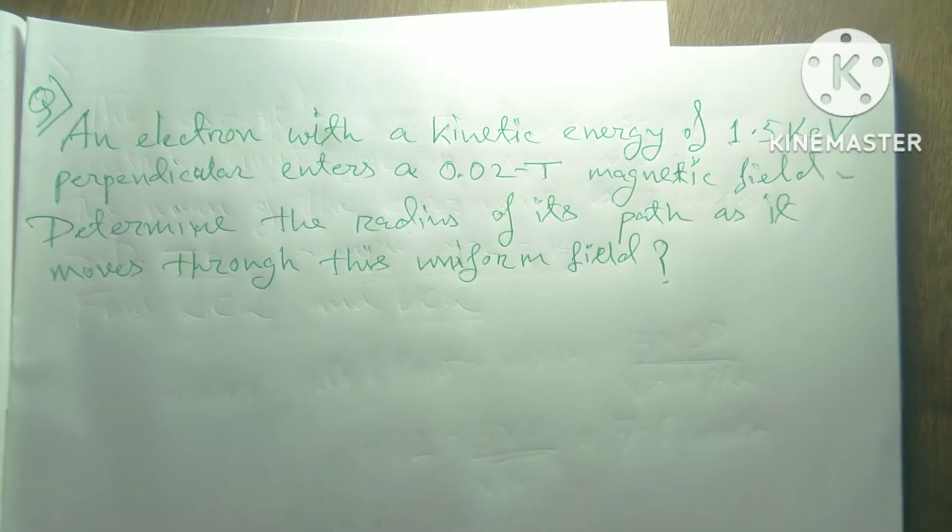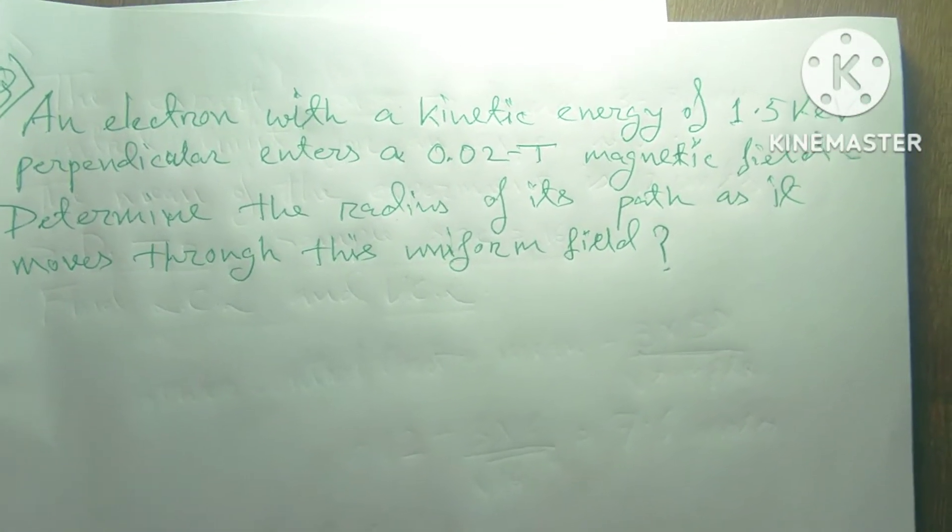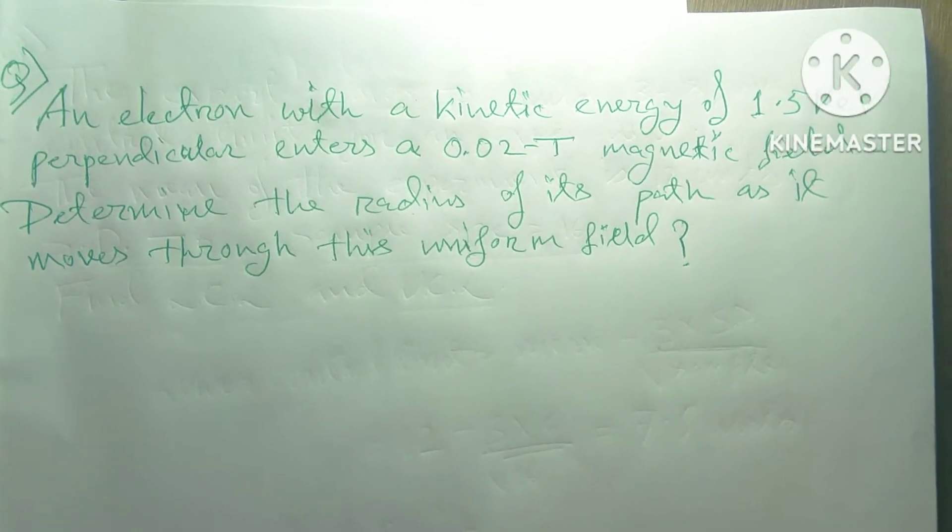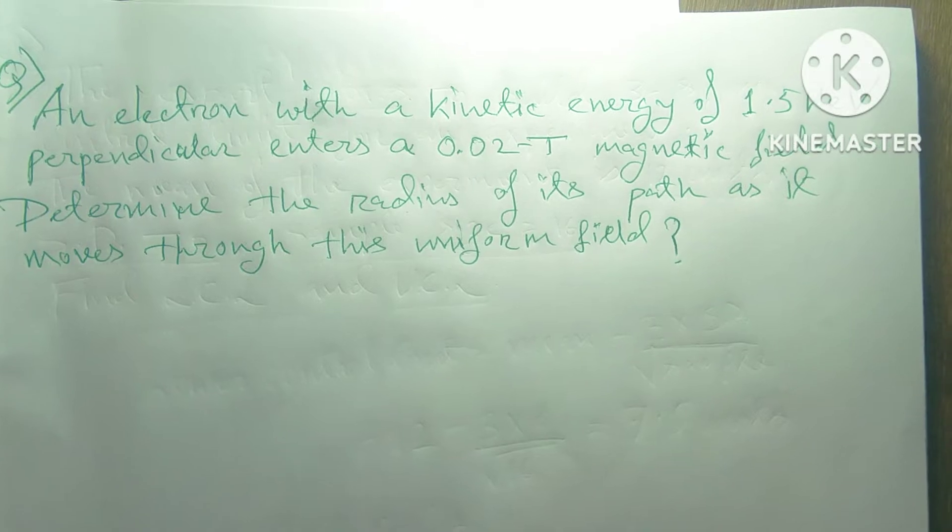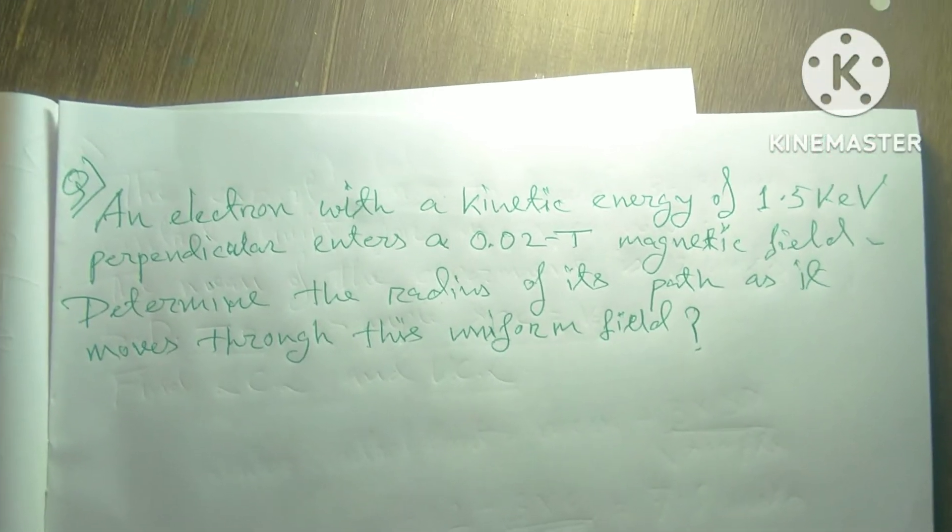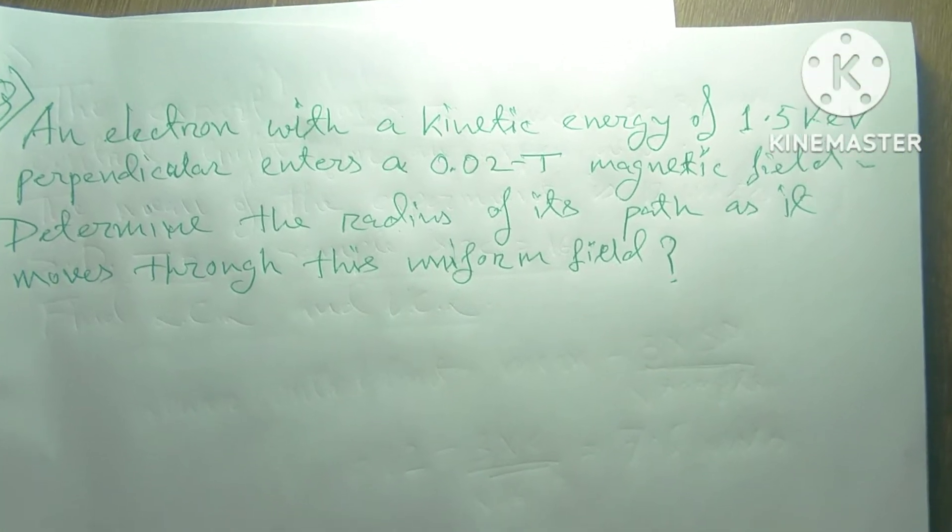An electron with a kinetic energy of 1.5 keV perpendicular enters a 0.02 Tesla magnetic field. Determine the radius of its path as it moves through the uniform field.